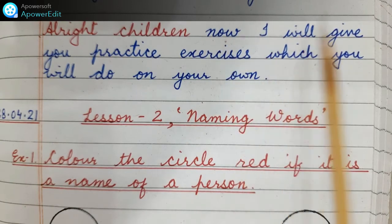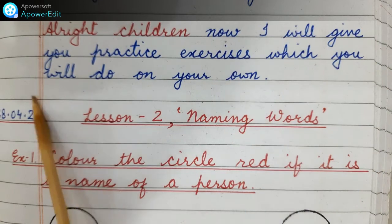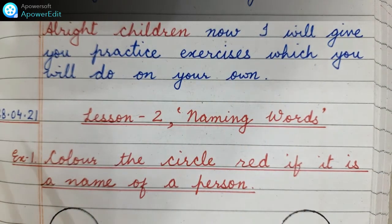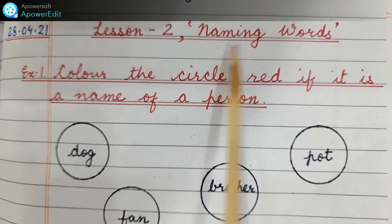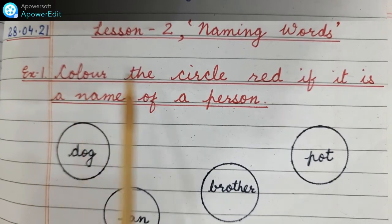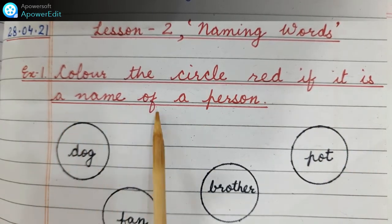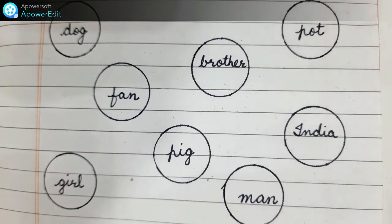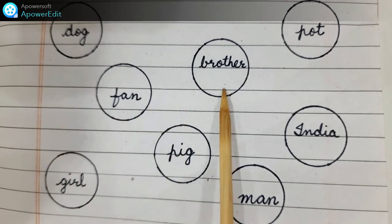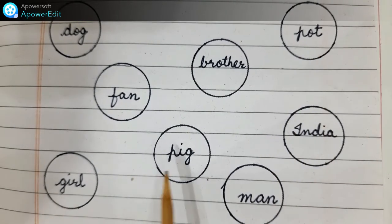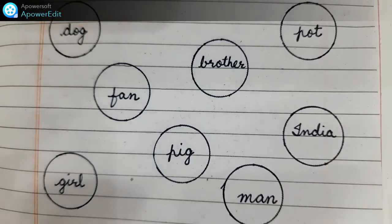Alright children, now I will give you practice exercises which you will do on your own. Put the date: 28/4/21. Lesson number 2, naming words. Exercise 1: color the circles red if it is a name of a person. Here are some circles in which some words are written. You have to circle and color it red if it is a name of a person. Words: dog, fan, brother, pot, girl, pig, man, India. You have to color only the person names red.